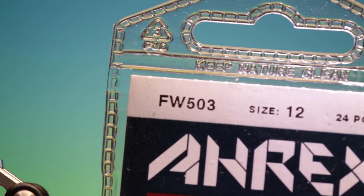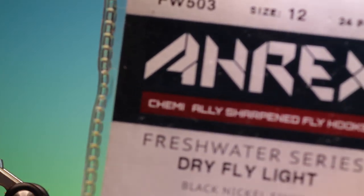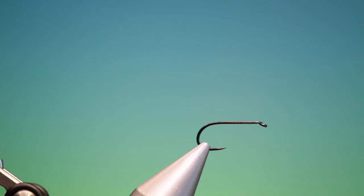We'll start with the RX FW 503 barbless dry fly size 12. This is the Wally Wing Hatch Matcher.